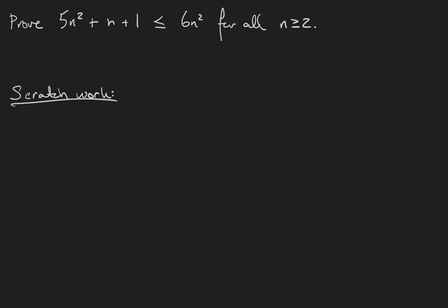In this example, we're going to prove that 5n squared plus n plus 1 is at most 6n squared for all n greater than or equal to 2. You may remember this is exactly the definition of a Big O relationship, so what we're really saying here is that 5n squared plus n plus 1 is Big O of n squared.